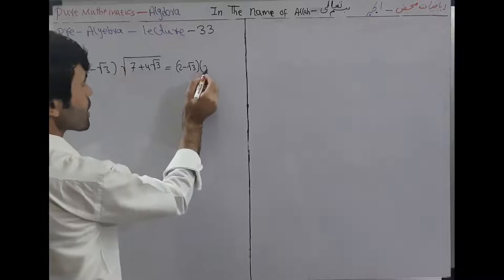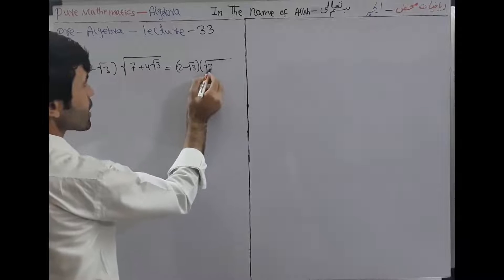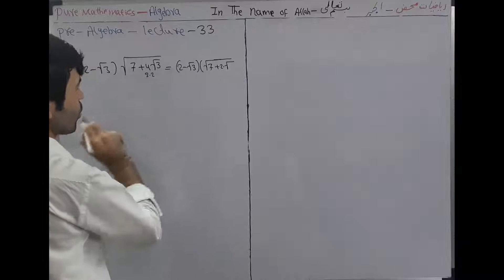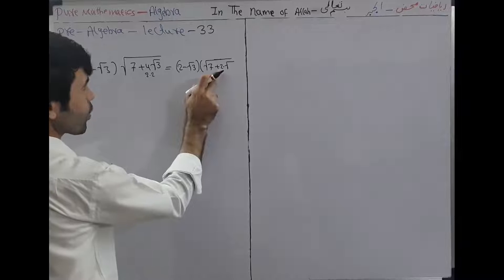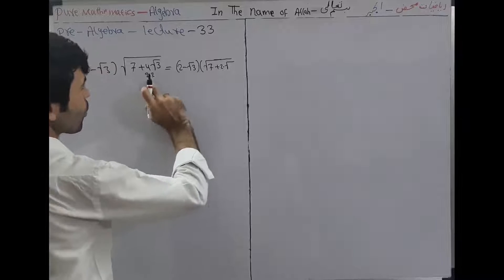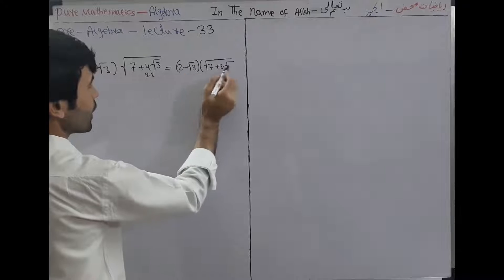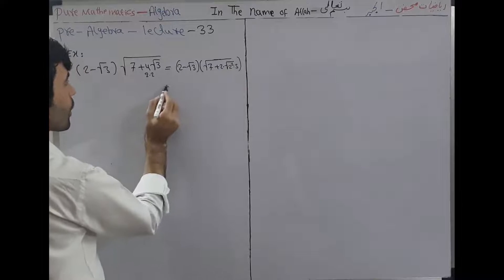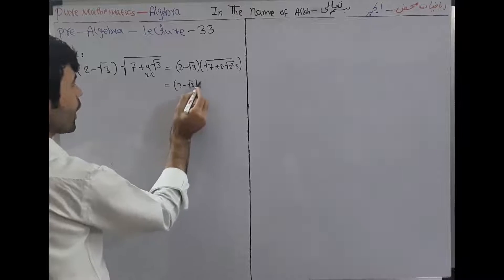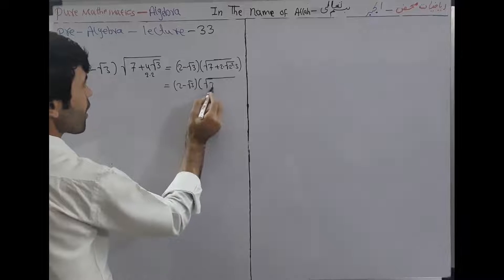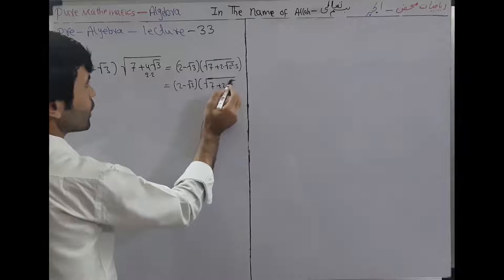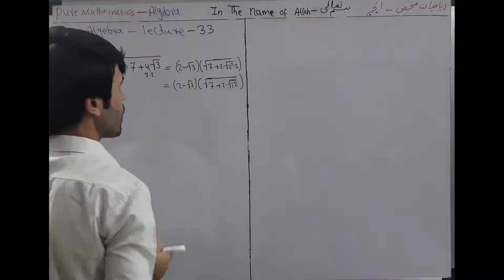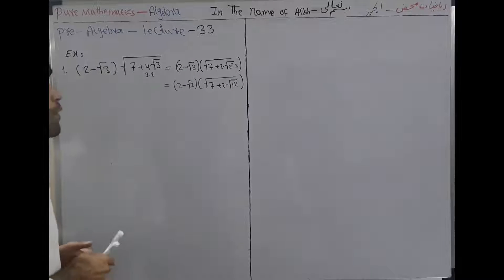We can rewrite the second factor. We take the 2 outside and write another 2 inside the square root, giving 2·√3. Then 2 squared times 3 equals 12. So it is equal to (2 - √3) into (√7 + 2·√12).